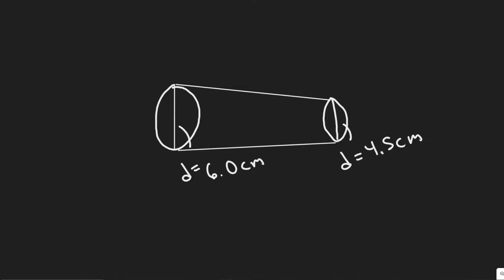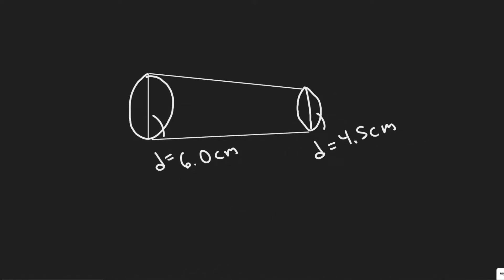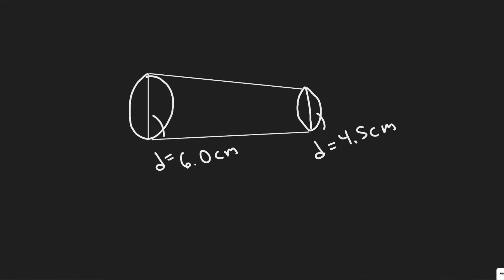Let's start by drawing what's going on here. We can imagine this is the pipe — it starts off 6 centimeters here, and then it slowly shrinks down to a diameter of 4.5 centimeters. What we're trying to find is the volumetric flow rate.